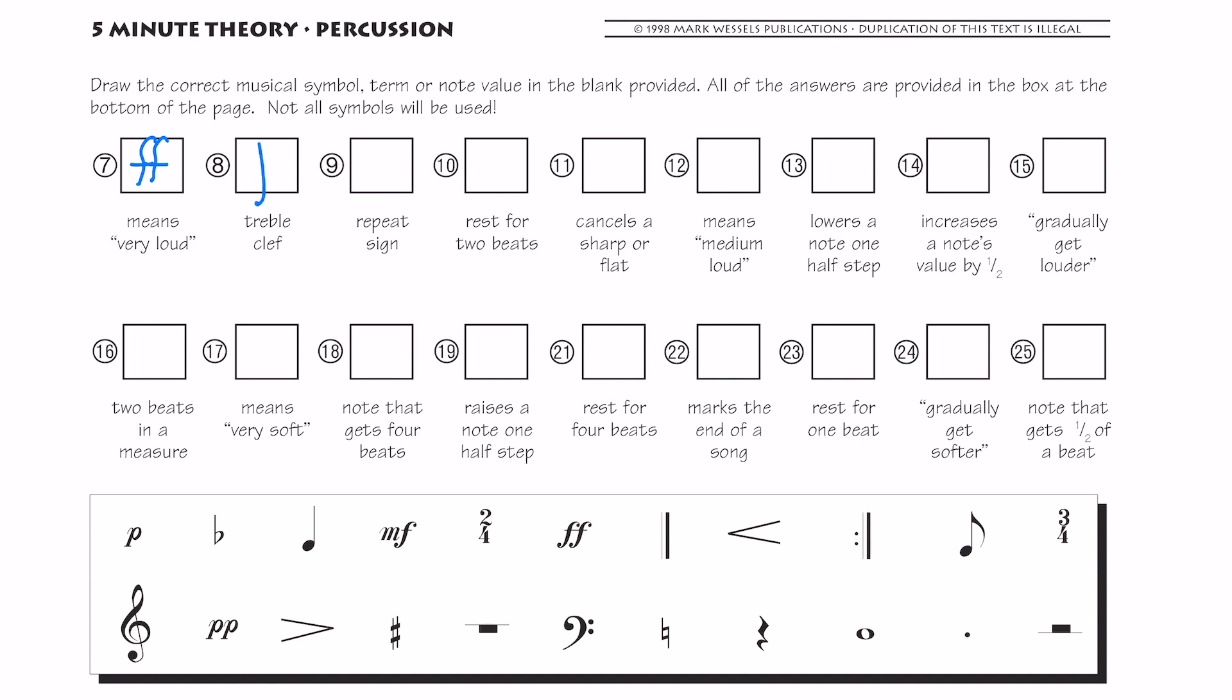So we can draw a treble clef. Hopefully you remember how to do that. A repeat sign. So remember the repeat sign is actually this one. If I drew it backwards, it would be the other side of the repeat sign. You could do it either way. A rest for two beats. What kind of rest gets two beats? A half rest. Remember a half rest looks like a hat. What cancels a sharp or flat? A natural sign. And don't forget you can use these down here just to kind of look at it. What means medium loud? Well, medium is mezzo and then loud is the forte. So medium loud.